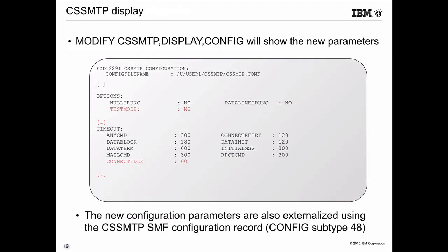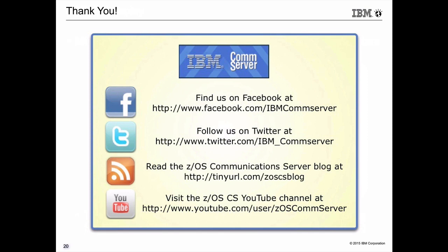The next chart shows the configuration file display with CONNECT_IDLE coded at 60 seconds. In summary: the three mail daemons will after v2.2 be down to one. The key things to think about are getting off SendMail going to CSS SMTP or getting off SMTPD, using the test mode capability provided as an APAR and in v2.2 to help you get there.